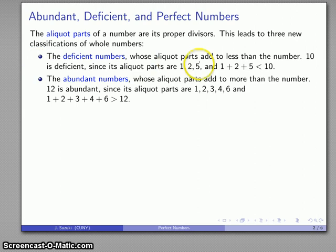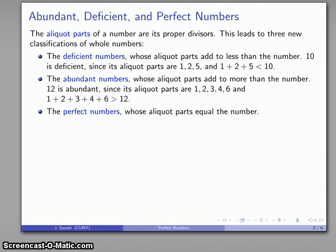If I have less than the number and more than the number, it seems reasonable that I could have exactly equal to the number, and I can have the perfect numbers where the aliquot parts are equal to the number. For those of you who have a classical background, you'll probably realize that perfect is not actually a Greek term. It emerges from Greek number theory, but the term itself, perfect number, is a Latin term. Perfect comes from the Latin word meaning complete, and in this case the idea is that the parts are completely equal to the number.